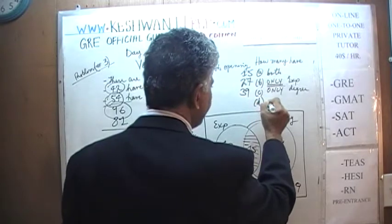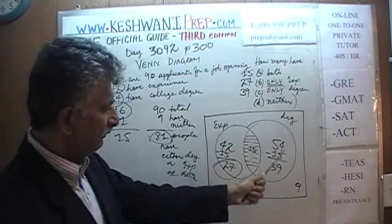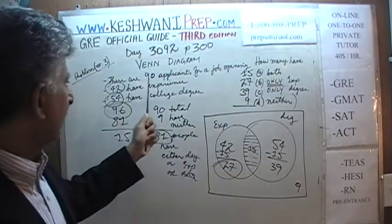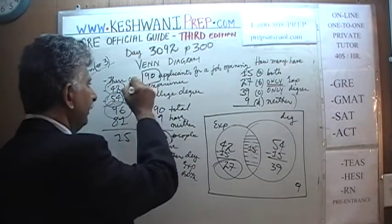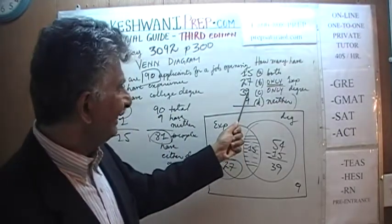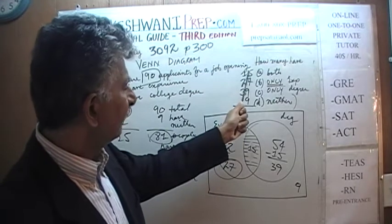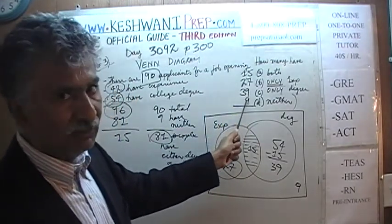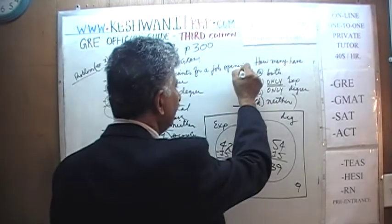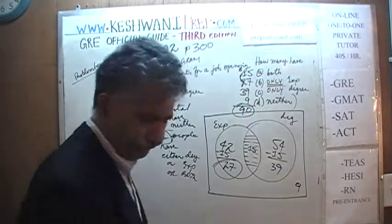And how many have neither? That was given to us: 9 such people. Now these four figures must add up to 90. 27 + 39 + 15 + 9 = 90. Voilà — there is your answer.